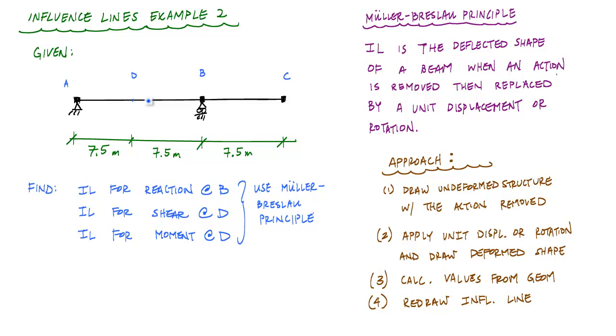We're going to use the Mueller-Breslau principle, which I've summarized over here. If you've seen Example 1, you're pretty familiar with this approach. Here's the approach I like to take with influence line problems.